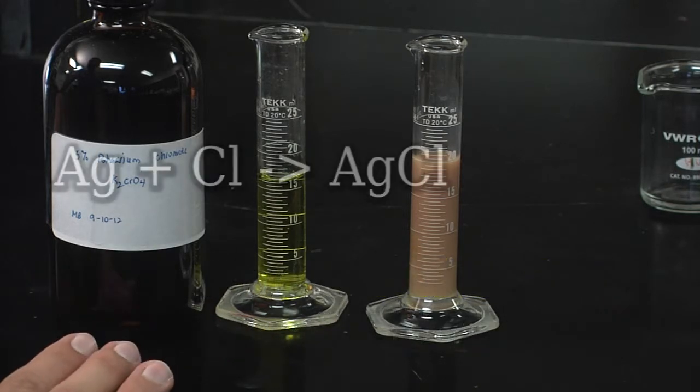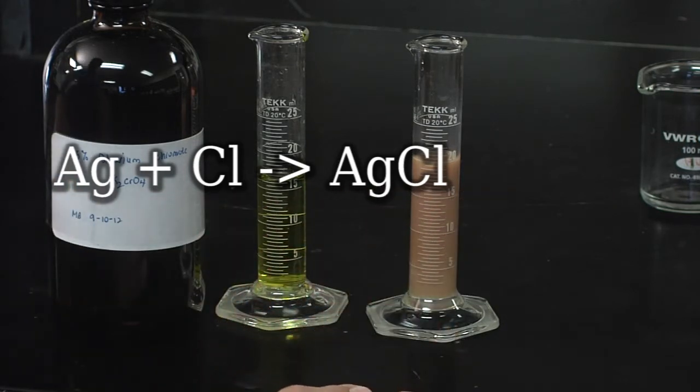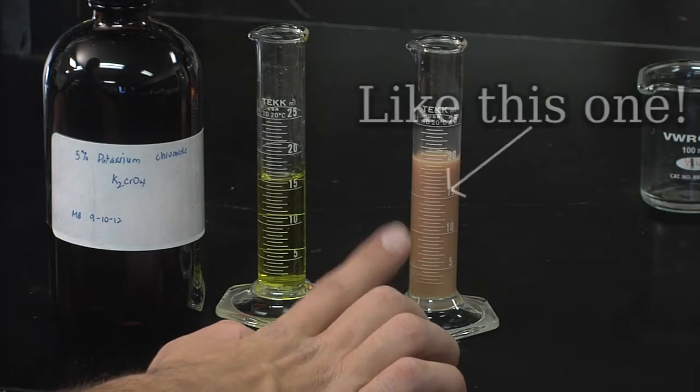So initially, the silver ion will react with the chloride to form precipitate silver chloride. Once all of the chloride is removed, the silver will react with our indicator to form a red-brown precipitate.